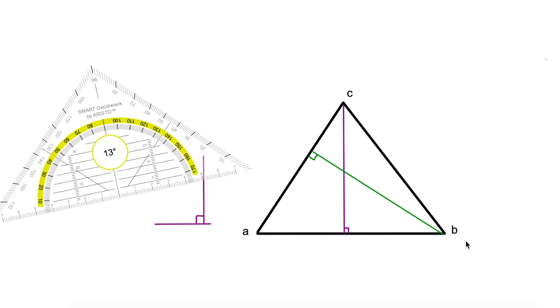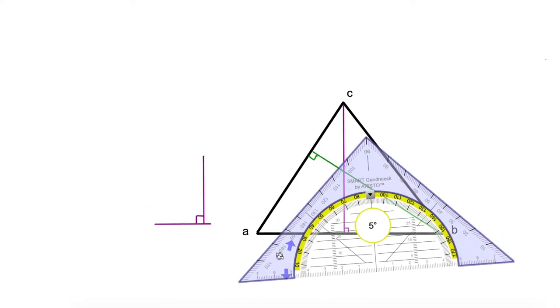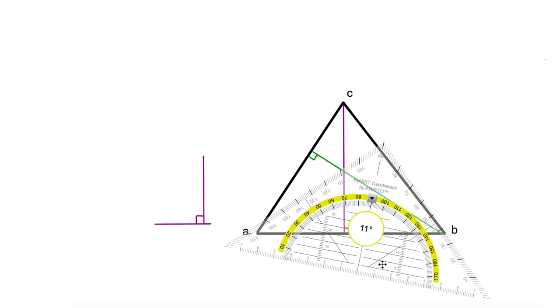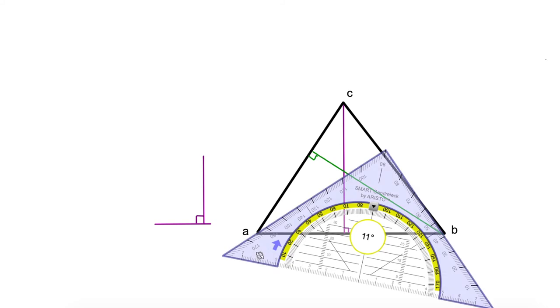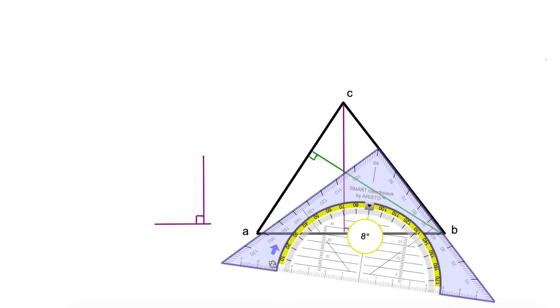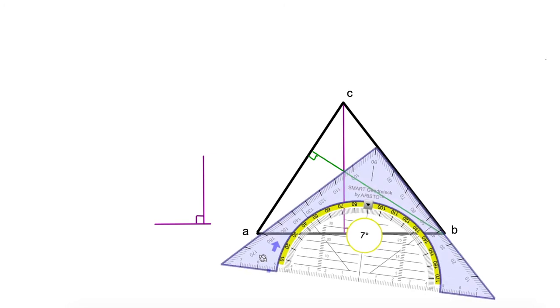Last but not least, I'm going to do the altitude of segment CB. Again, I'm going to position my square ruler perfectly aligned with that segment, so I can draw a 90-degree angle. But it's not going to be a 90-degree angle that goes anywhere. It's going to be one that goes through the opposite vertex, which in this case is point A.